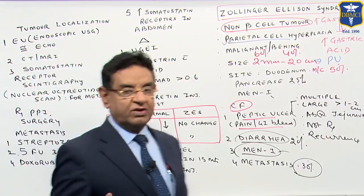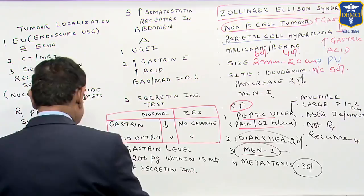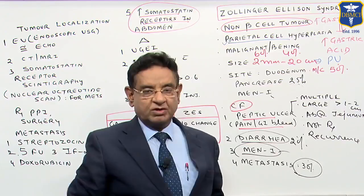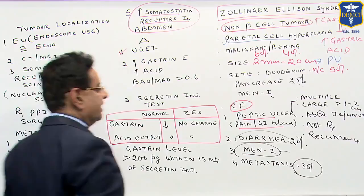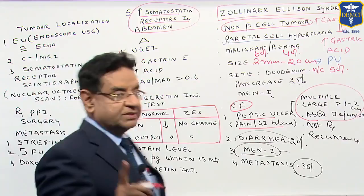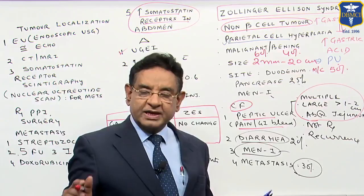One more special feature of Zollinger-Ellison syndrome is that in these patients there is an increase in somatostatin receptors — this is a special feature which we also use in investigation. Endoscopy is mandatory for diagnosis; the endoscopic findings I have described strongly suggest ZES, but remember, with just endoscopy alone you cannot confirm the diagnosis of Zollinger-Ellison syndrome.